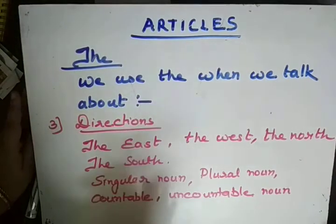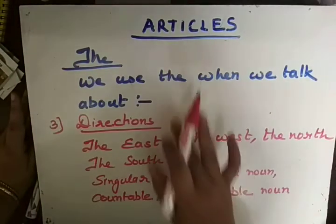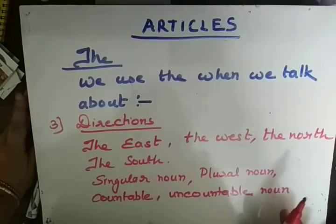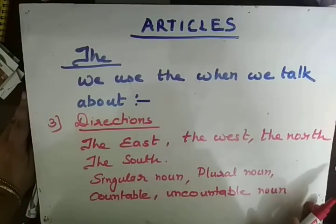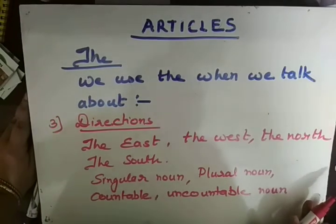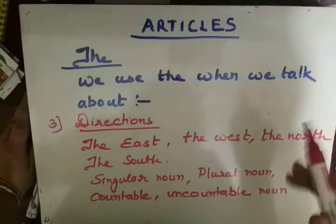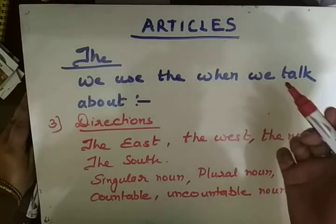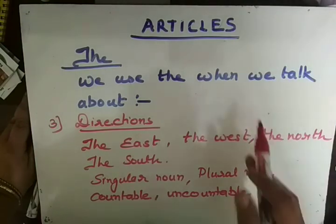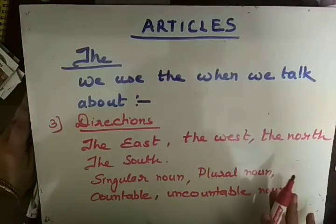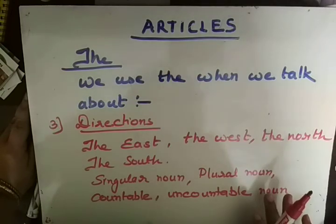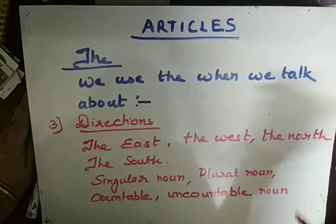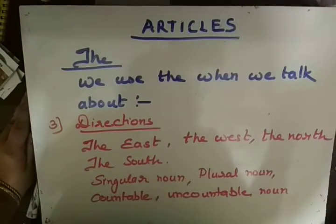So I think we have easily covered the uses of A, AN and THE. The basic uses are clearly understood. If you have any doubts you can ask. The main points to remember are: vowel sound, consonant sound, and singular countable nouns. If you liked this video, please don't forget to like it, share it as much as possible, and do subscribe to our channel. Till then, bye!